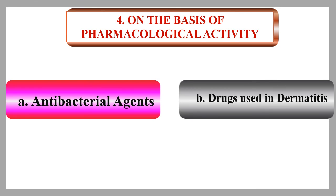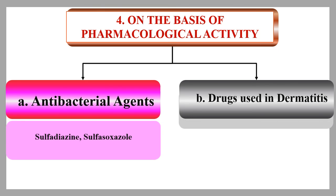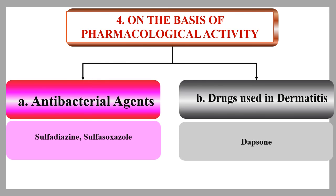The fourth classification is on the basis of pharmacological activity. Sulfonamides can be classified as antibacterial agents — examples include sulfadiazine and sulfisoxazole — and those useful only for dermatitis infection, such as dapsone.